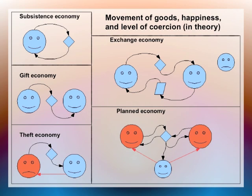In the five types of economies, there are different flows of goods, different levels of happiness, and different levels of coercion. In a subsistence economy, people produce for themselves when they want to, and as long as they can do that with appropriate expectations, they may be happy. In a gift economy, people give something they have or have made to somebody else, and the transaction is voluntary. In a theft economy, someone coerces someone else, and that person is generally unhappy. In an exchange economy, voluntary exchanges happen where both people presumably are happy.